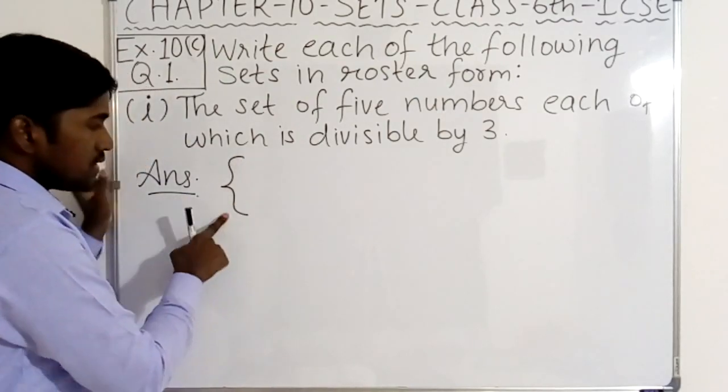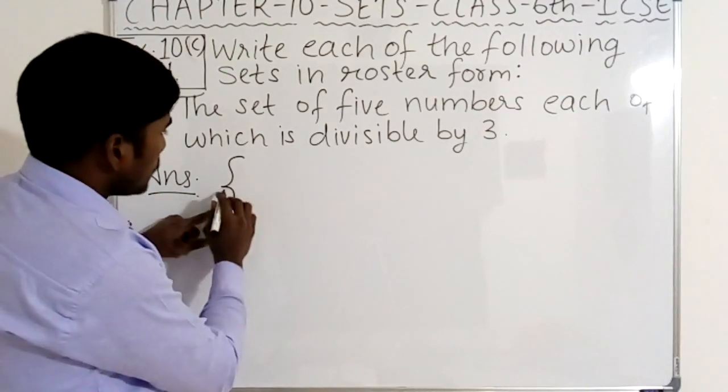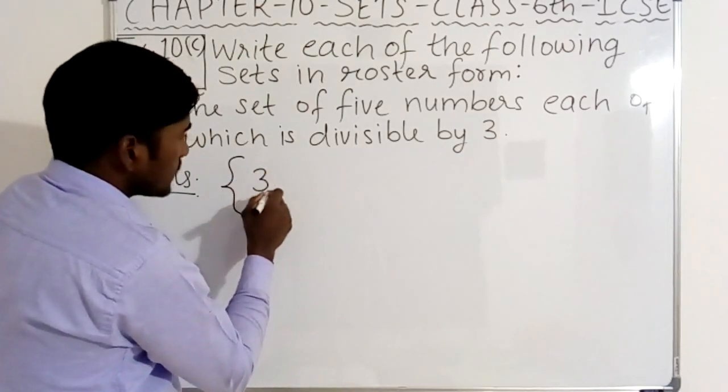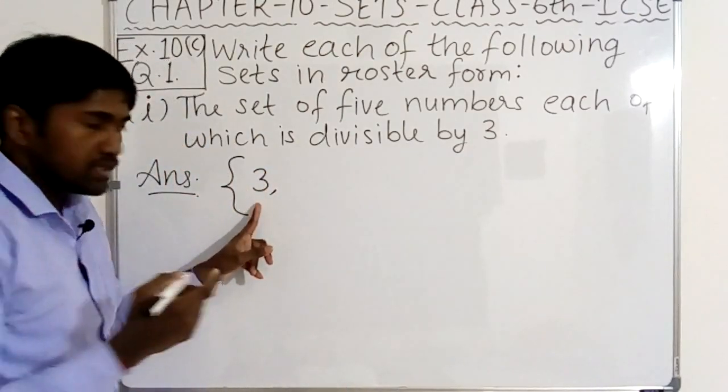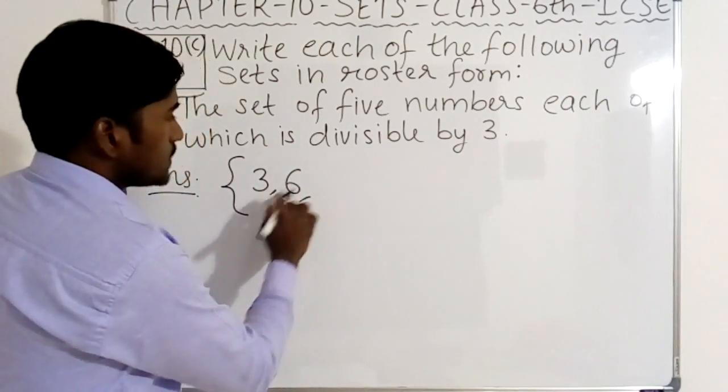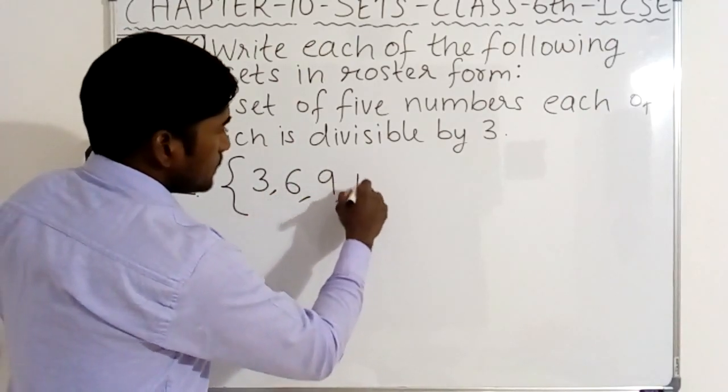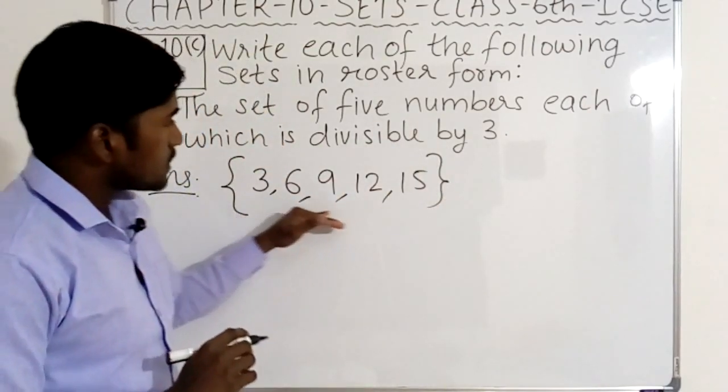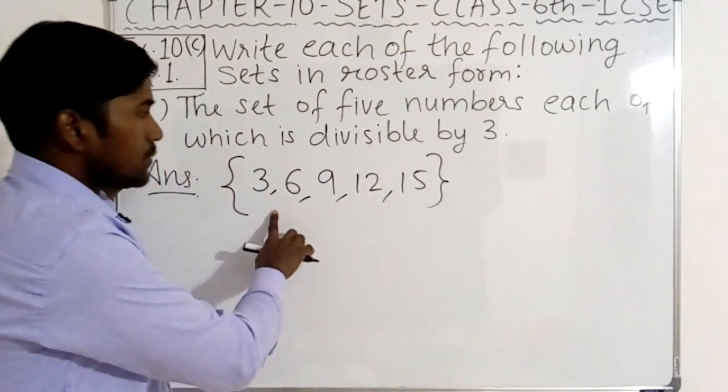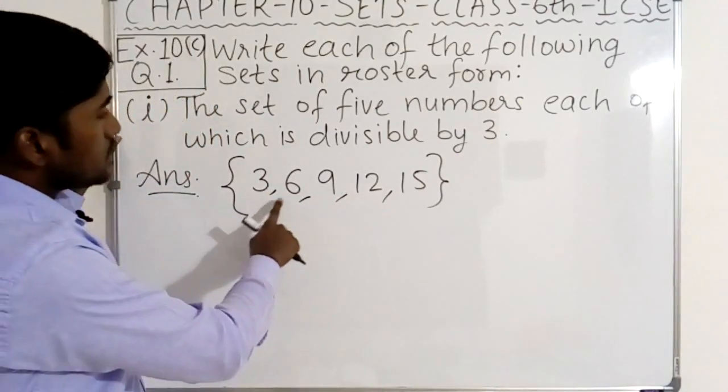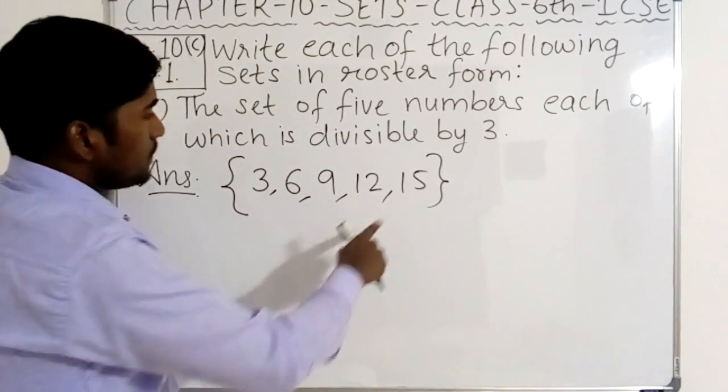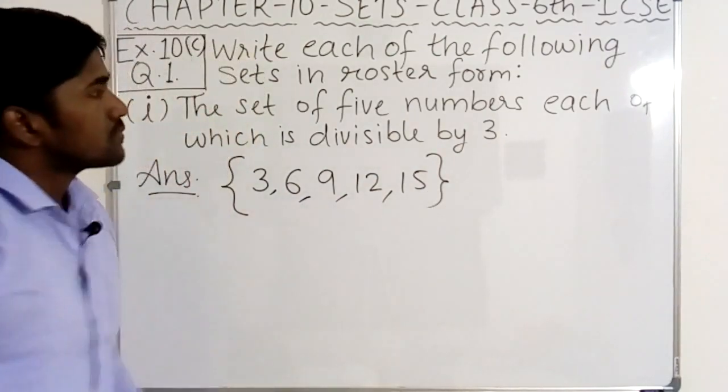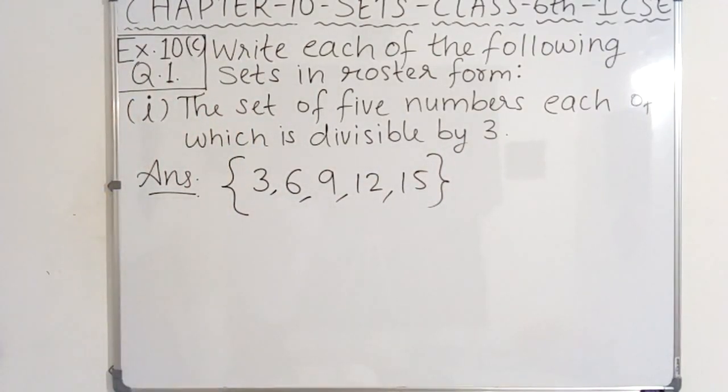First of all, you have to write this curly bracket open, then you have to write numbers which are divisible by 3. 3 is divisible by 3, 6 is divisible by 3, then 9, then 12, then 15. Then you have to close the curly bracket and all these numbers are separated by commas. Here we have to write 3, 6, 9, 12, 15. All these numbers are divisible by 3 and this is the roster form.